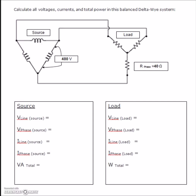Continuing on with the three-phase calculations, we're going to look at the next one. We've got a delta source and a Y load. This is our secondary of our transformer, and we've been given a 480V supply and a resistance on the phase of our Y of 40 ohms.